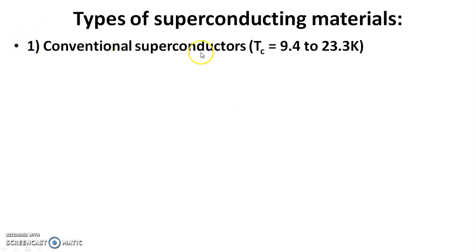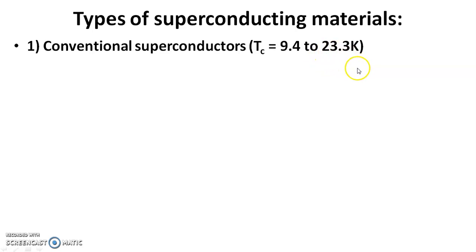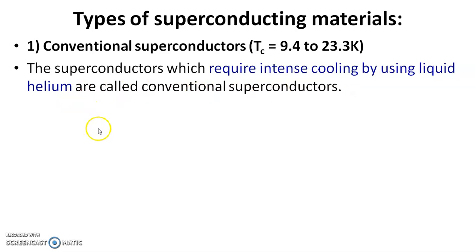First, conventional superconductors. These have a transition temperature of 9.4 to 23.3 Kelvin. Conventional superconductors are superconductors which require intense cooling by using liquid helium. They are called conventional superconductors.